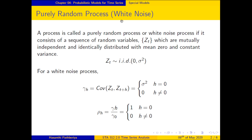Such a time series is called a purely random process. The mean does not change over time, the variance does not change over time, and it does not show any repeating seasonal patterns. We denote it as yt = zt, where zt is an independently and identically distributed random variable with mean zero and constant variance.